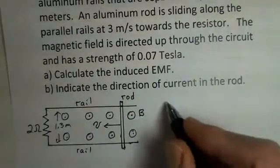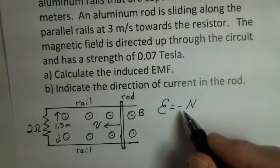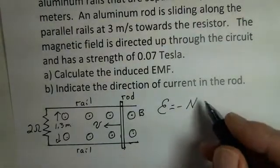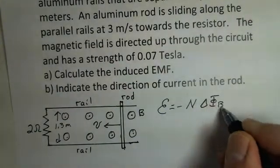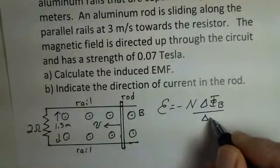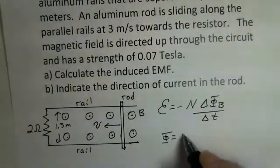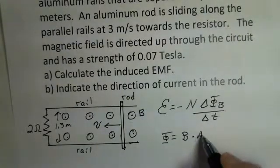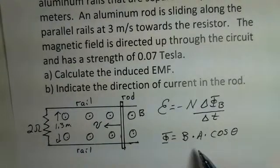We calculate the EMF with Faraday's law: a minus sign, the number of turns of wire, and then the rate of change of the magnetic flux. The magnetic flux itself is equal to the magnetic field times the area times the cosine of theta, where theta is the angle between the magnetic field vector and the area vector.